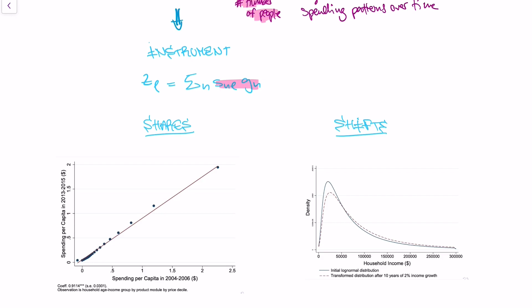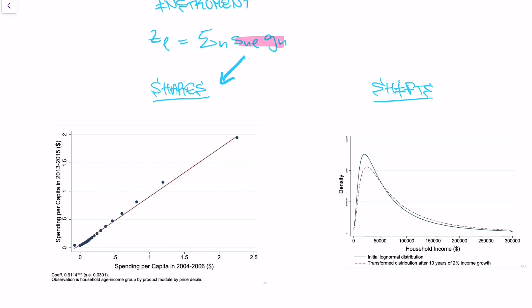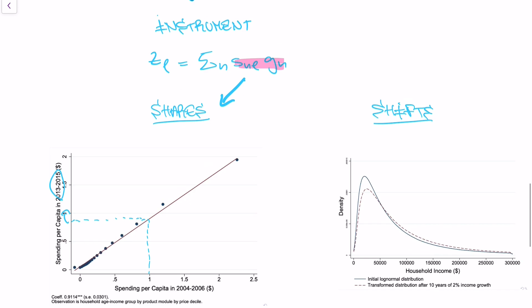Let's try to think about those specific components in the context of the paper. So the shares are the spending shares per household group. And remember, we assume them to be constant. And what you see here is a graph from the paper, and it actually shows that spending per age income group for different product segments is constant over time. So if I have spending per capita of $1 in 2004 to 2006, I will have a spending per capita of roughly $1 in this product group in 2013 to 2015. So we assume the shares, and this is very important in the shift-share estimator, to be constant.